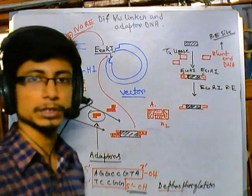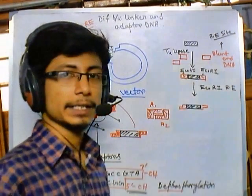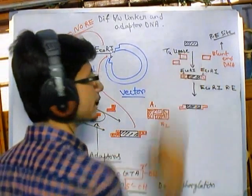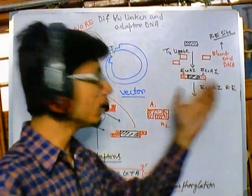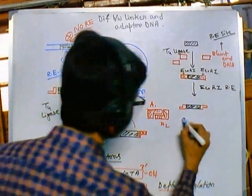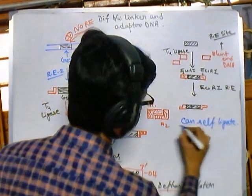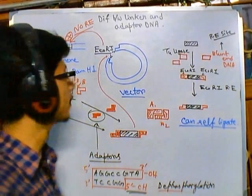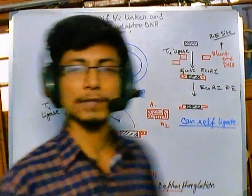Both approaches achieve the same structure but with different methods. However, when you provide blunt-end DNA with T4 ligase in the linker approach, there is a possibility of self-ligation of the blunt-end DNAs. That's why adapter DNA is much more preferable over linker DNA — linker DNA can self-ligate, but adapter DNA self-ligation is blocked due to dephosphorylation. That's why adapter DNA is better than linker DNA.